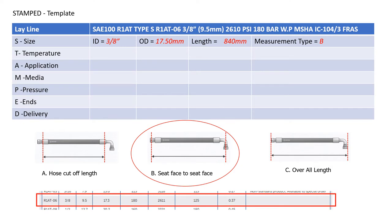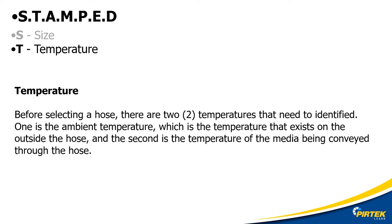I've gathered some information and now I'm going to start populating my STAMPT template. The ID of the hose is 3/8 or 9.5 millimeters. The outside diameter or OD is 17.5 millimeters. The length from seat face to seat face is 840 millimeters — measurement type B. Our goal is to ultimately work out what the hose cutoff length is. We'll now look at T, which is temperature.